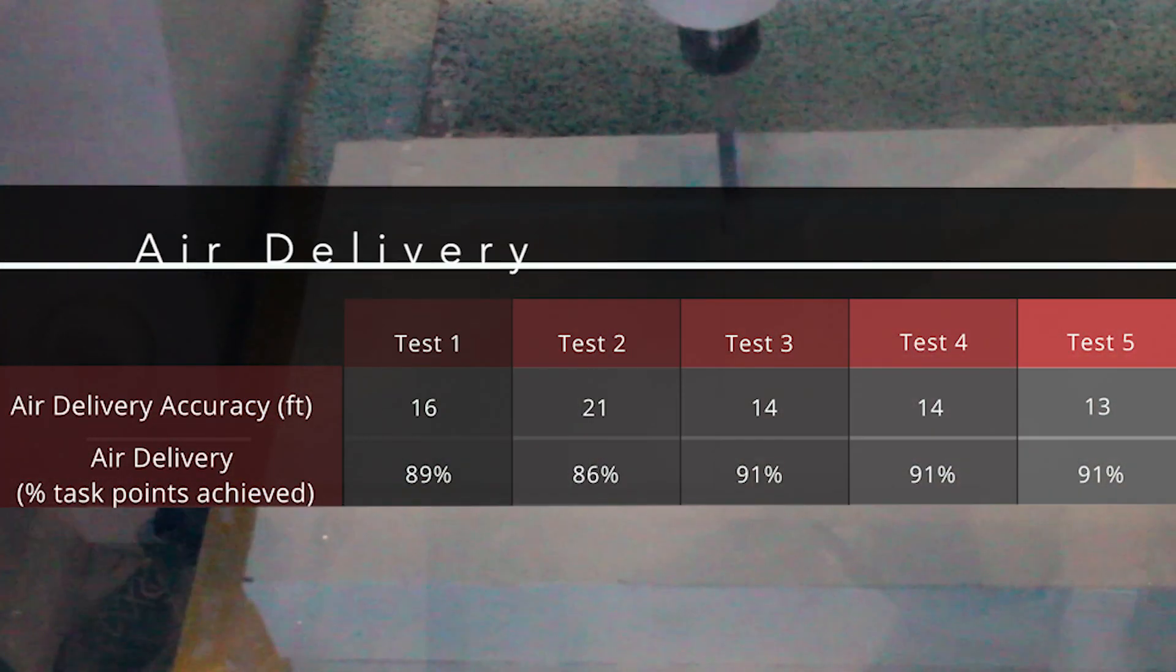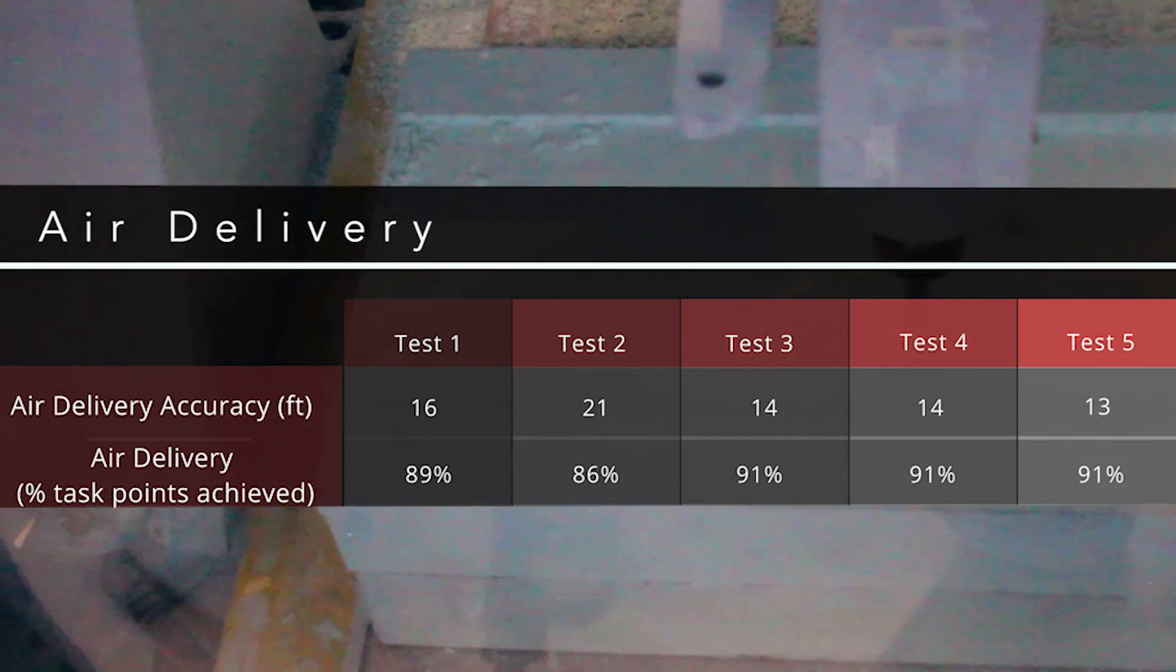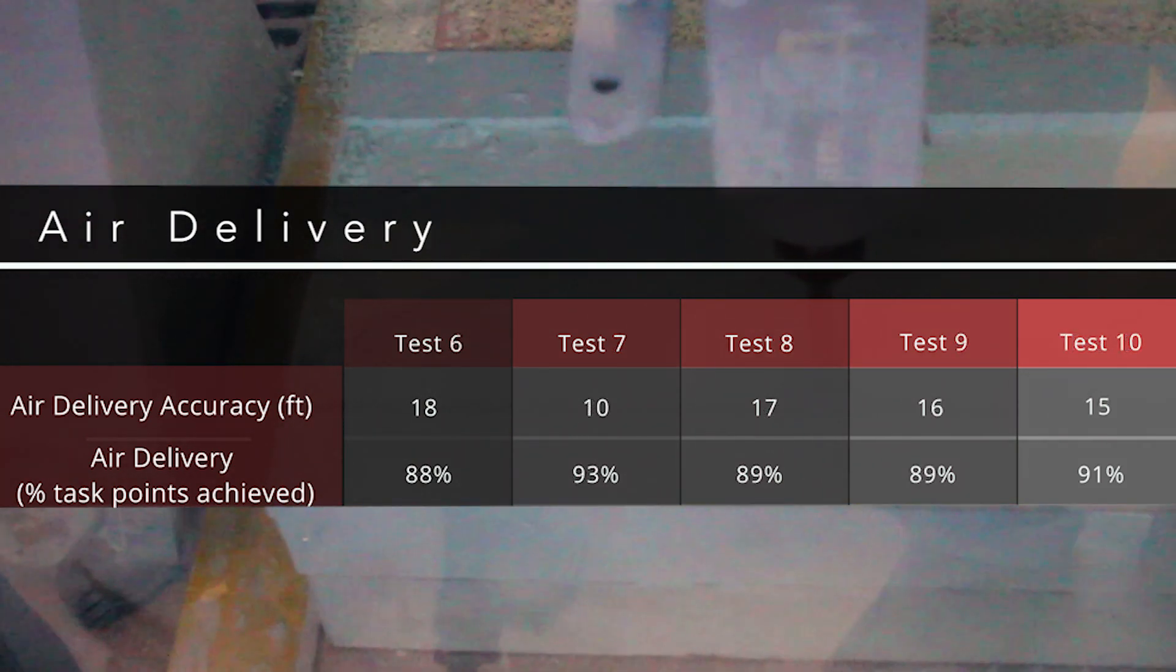For air delivery, CU Air dropped an average of 15 feet from the target, scoring 90% of possible points. The team expects similar performance at competition.